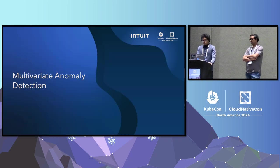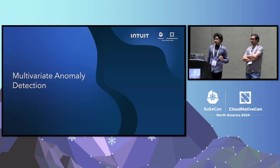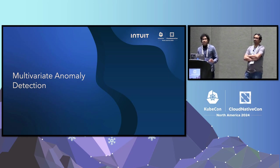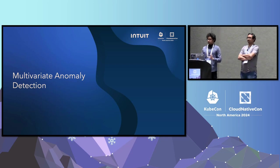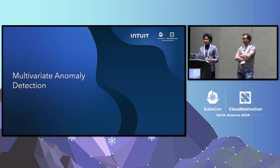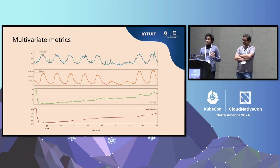Now, moving on to multivariate anomaly detection. Before that, I want to ask how many of you have a background in data science and ML? Okay, very few — but no worries. My goal is to give you a broad intuition behind the approach regardless. So what are multivariate metrics and how do they look?